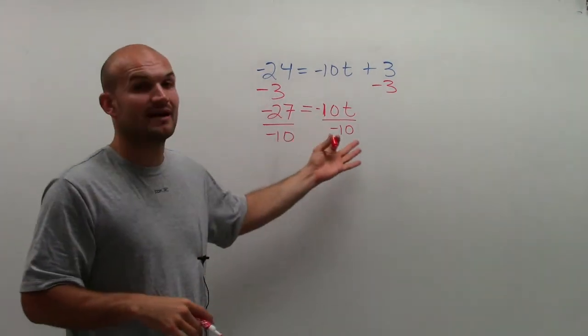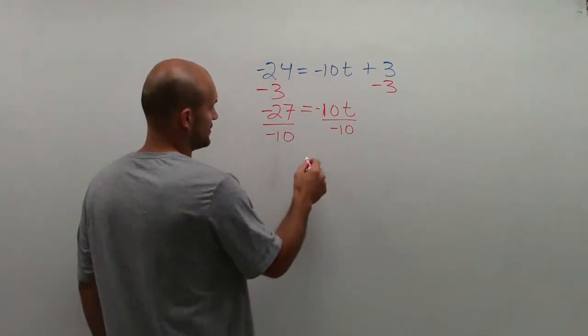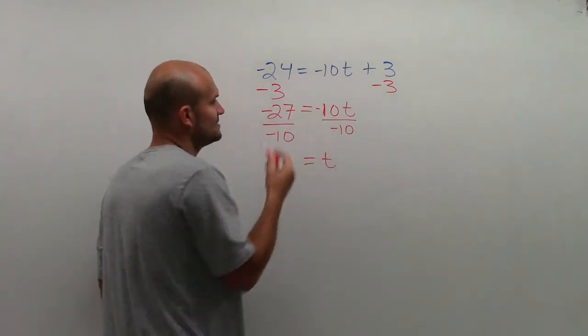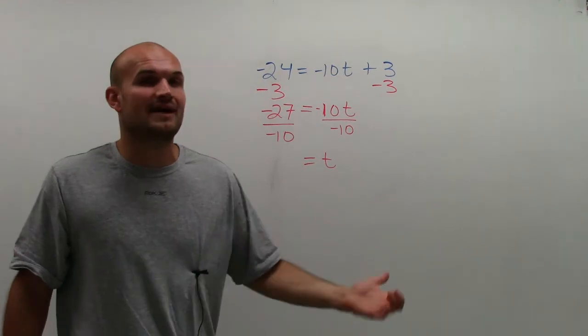And negative 10 divided by negative 10 is 1. 1 times t is t. So on the right side, I'm left with t. And then you see that negative 10 does not evenly divide into negative 27.